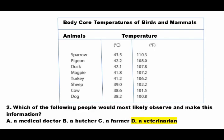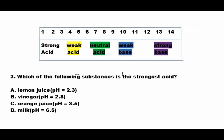The answer is D, a veterinarian. The veterinarian is the one who observes the body core temperatures of birds and animals, makes the information, files it, and observes these animals. Let's go to number three.